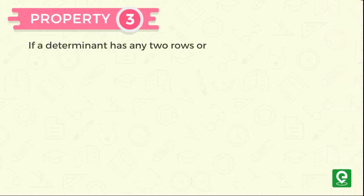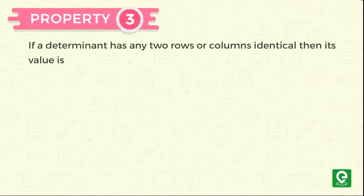Property 3: If a determinant has any two rows or columns identical, then its value is equal to 0. For example,